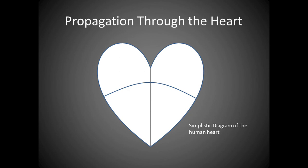This is a very simplistic diagram of the human heart. The heartbeat is initiated and controlled by electrical impulses that are generated and conducted by specialized myocardial cells. Activation normally begins in the sinoatrial node, also known as the SA node, located in the right atrium of the heart. Because of its rapid firing rate, the SA node normally serves as the heart's pacemaker.